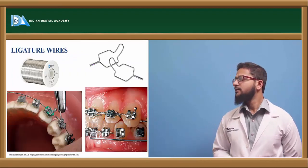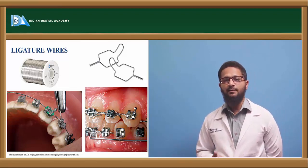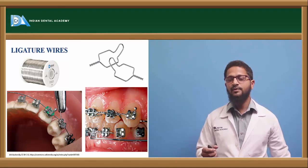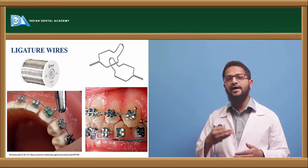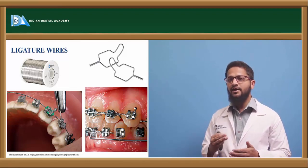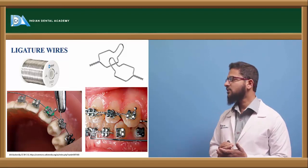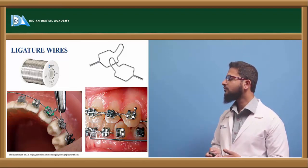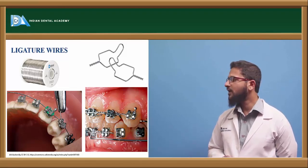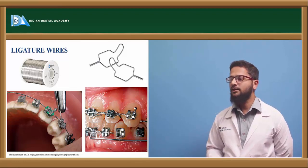Ligature wire is a very thin wire, usually 0.009 or 0.011 inches in diameter. It helps in properly engaging the arch wire into the bracket slot; after the wire is engaged, the ligature wire is tightened so the wire is properly held within the bracket slot. Ligature wires are also used for other purposes such as retraction of teeth.